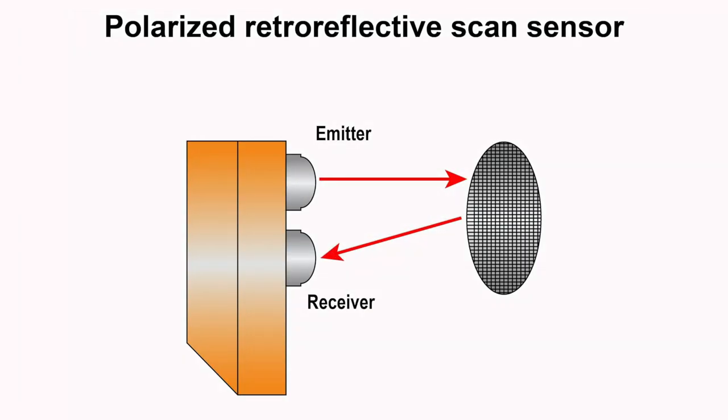Retro-reflectives have the emitter and receiver installed in the same unit, and light from the emitter is normally reflected back to the receiver by having a reflector or reflective tape on the opposite end. The same concept as the through-beam is used here. As an object passes through the light emitted, the amount of light received is reduced and is used to detect an object.